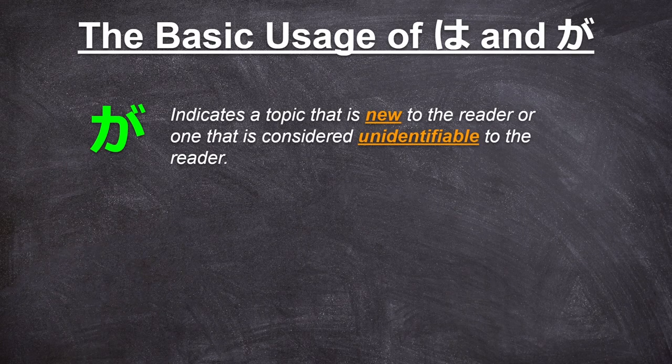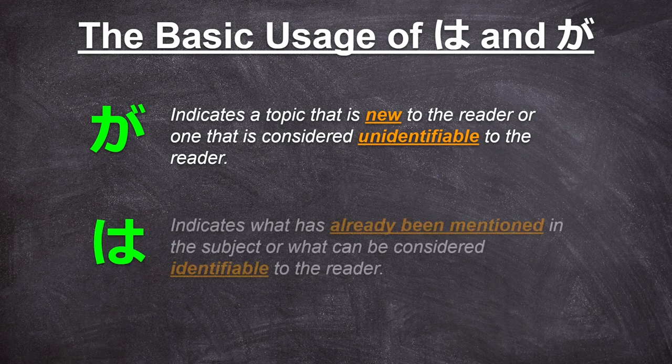Let's take a closer look at the basic usage of wa and ga in a sentence. Ga indicates a topic that is new to the reader or one that is considered unidentifiable to the reader — something they have never heard of or they can't identify. Wa, on the other hand, is the opposite, and indicates what has already been mentioned in the subject or what can be considered identifiable to the reader. In contrast to ga, wa is something the reader is already aware of because they've seen or heard it somewhere and can easily identify it. Let's look at an example.